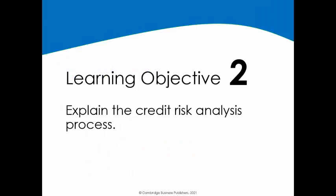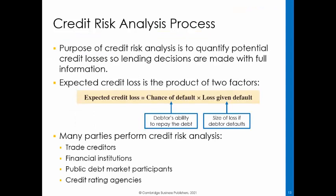In this learning module, we will discuss the credit risk analysis process that seeks to quantify expected credit losses to inform lending decisions. Many parties perform credit risk analysis. Expected credit loss is computed as the chance of default times the loan loss given default. Trade creditors typically acquire information to make credit decisions via credit applications. Trade creditors often extend credit to many customers within the same industry, making default rates highly correlated among customers. Therefore, trade creditors closely monitor information on industry trends and outlooks.